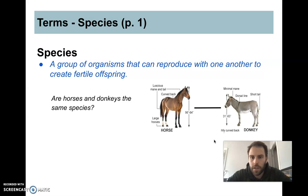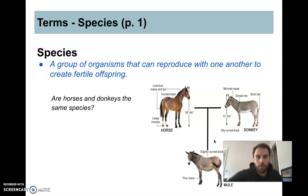Alright, you take a horse, you take a donkey and they mate and what you get is a mule. So it says a species is a group of organisms that can reproduce. It looks like it fits that definition, horse and donkey can reproduce, but it's in order to create fertile offspring.